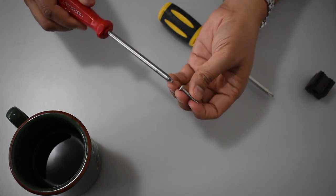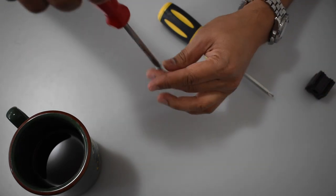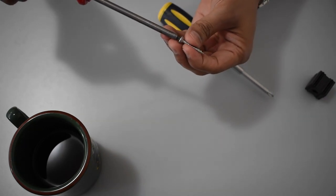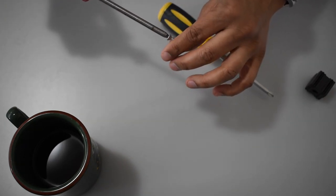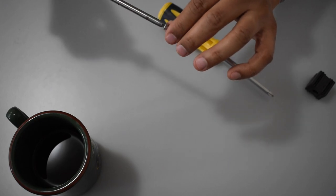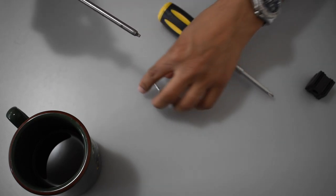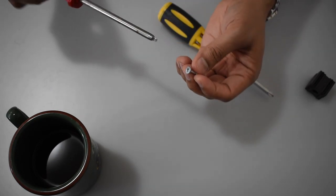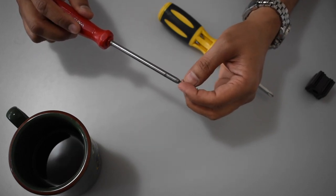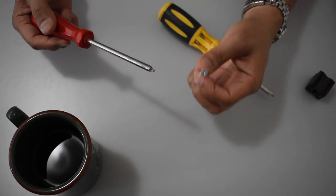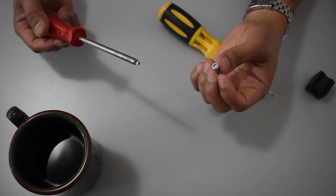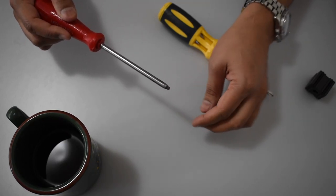As you can tell, this screwdriver is not magnetized, and what ends up happening is if the friction fit is not solid, the screwdriver will fall. Sometimes this means it could fall into nooks and crannies in either the appliance or in other areas of your vehicle that you don't want it to fall into.